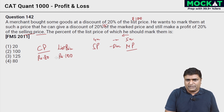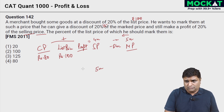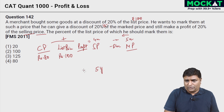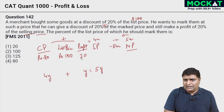He still makes a profit of 20 percent of the selling price. So CP plus profit equals SP. Profit is one fifth of selling price. Let selling price be 5y, then profit is y, and cost price is 4y, since 4y plus y equals 5y. We know cost price is 80 rupees, so 4y equals 80, giving y equals 20 rupees. Then SP equals 5y equals 100 rupees.